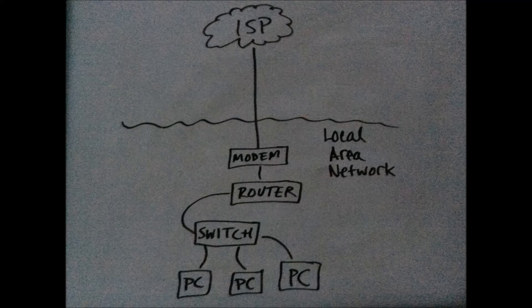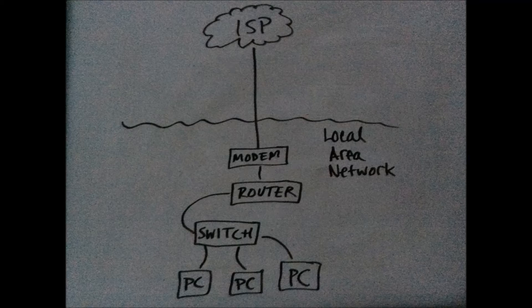Another way of thinking of routers is private branch exchanges in telecom. Businesses and schools have their own private phone systems. It would be extremely expensive to have a separate phone line for every telephone in a building, but very cheap to have a private telephone system with local switching and a number of outside lines. Likewise, computers on a local area network are like those internal telephones, and the router connects them to the public network.